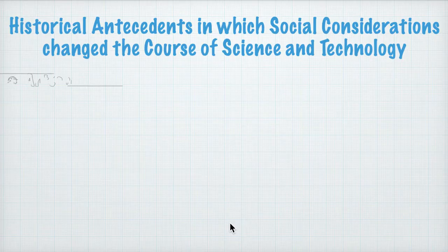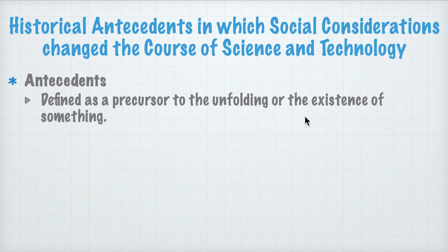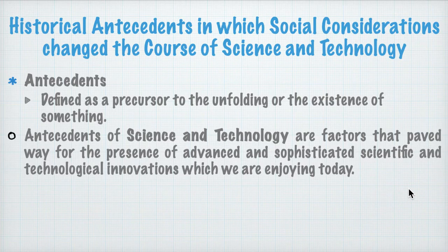Next up in our definitions is antecedents. Antecedents are defined as a precursor to the unfolding or the existence of something. We can say it's a significant event that happened in the past that gave rise to the existence of something significant. So antecedents of science and technology are factors that paved the way for the existence of advanced and sophisticated scientific and technological innovations which we are using now — like the laptop I'm using, and the internet, for one. Those are the things we're enjoying today.